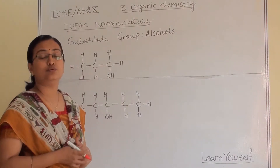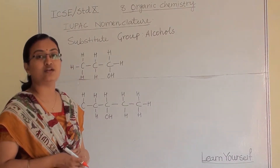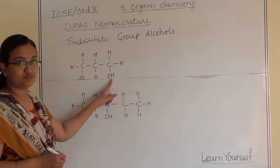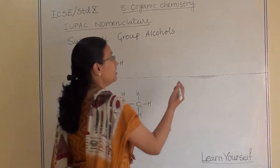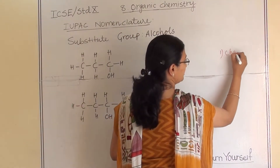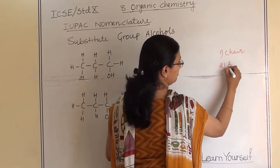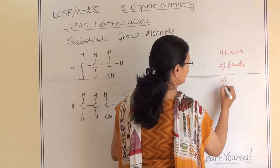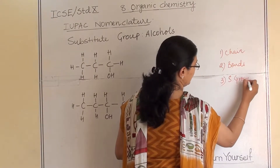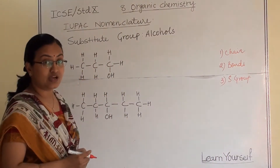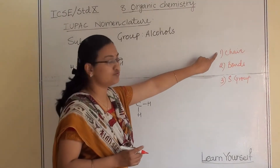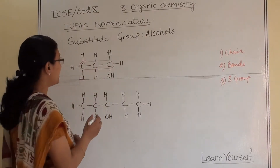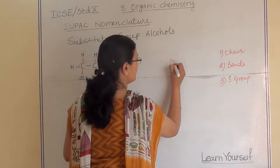Now let us understand how to name an organic compound when an alcohol group is attached. According to our rules of nomenclature: first identify the chain, second identify the bonds, third identify any substitute groups. Looking at the first example with OH attached — the longest chain has three carbon atoms, so it is going to be 'prop-'.